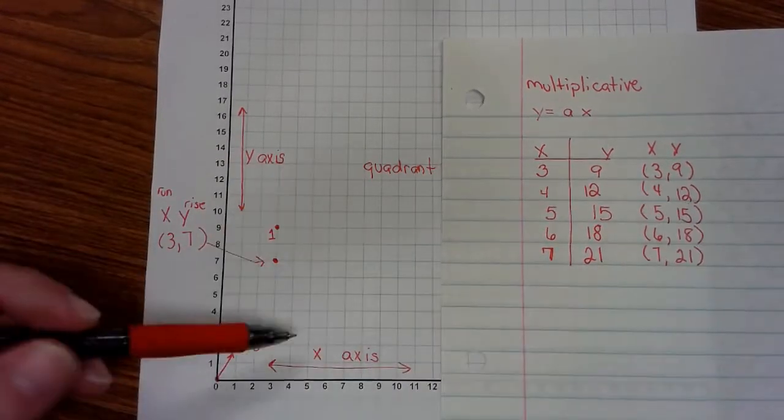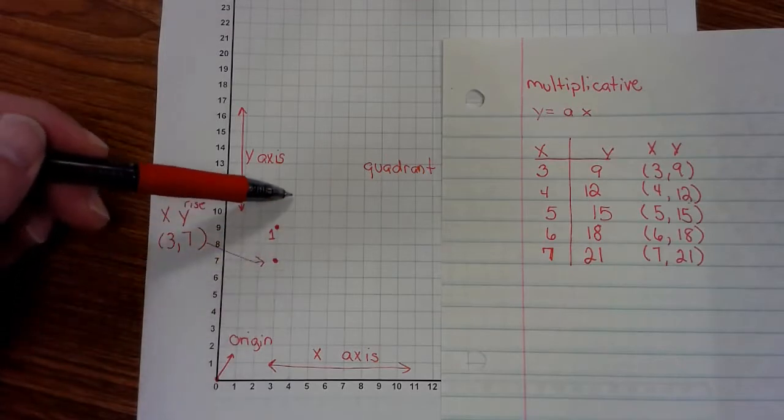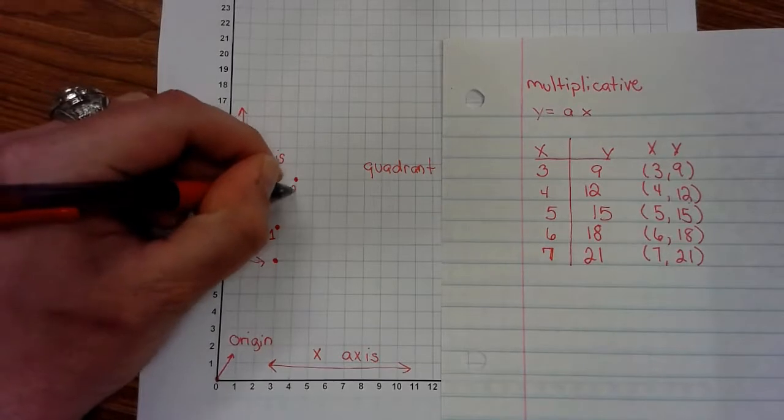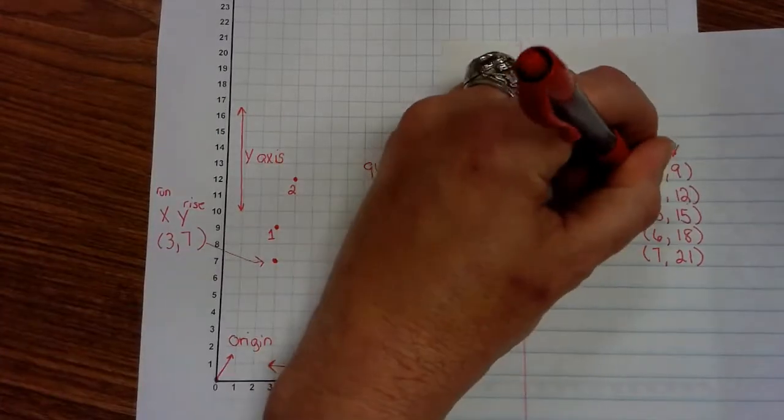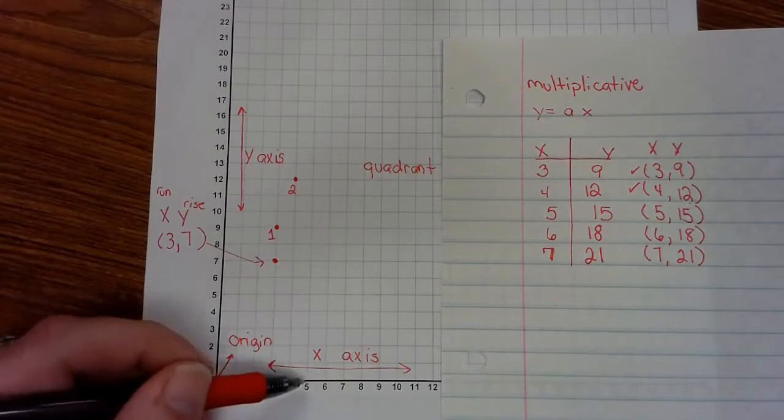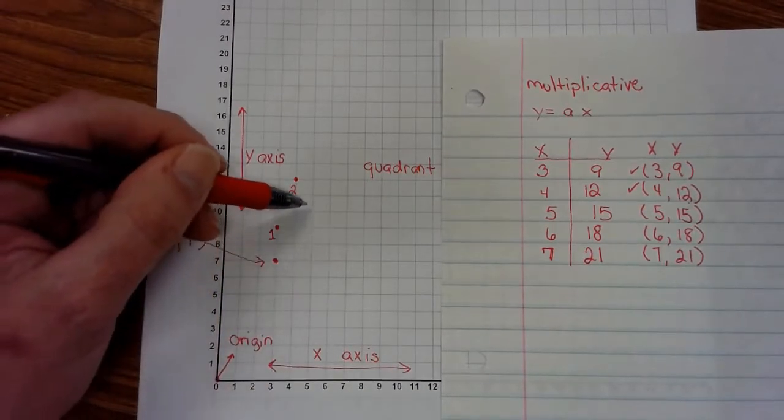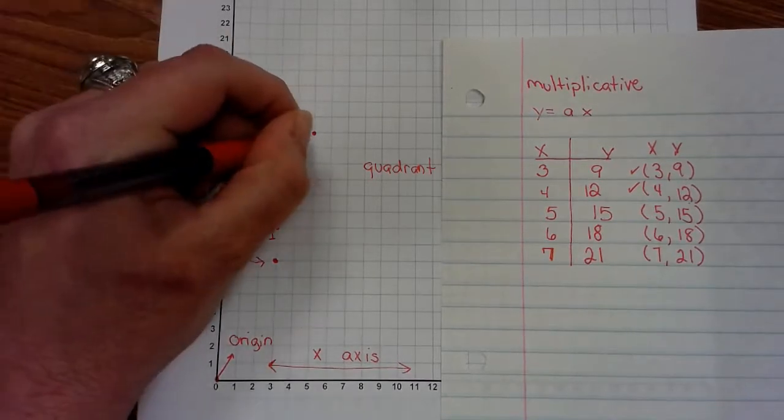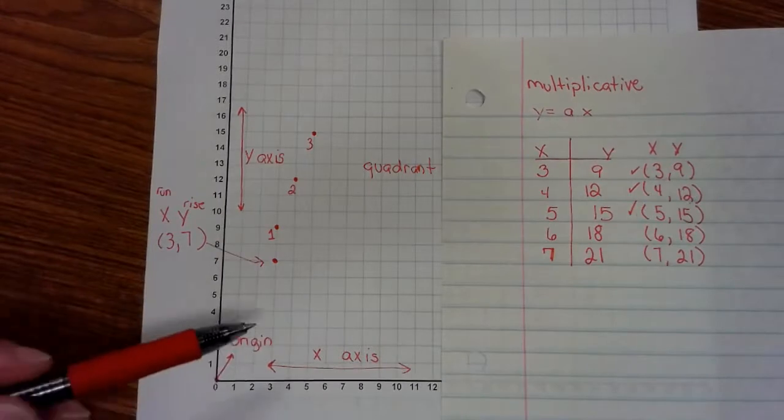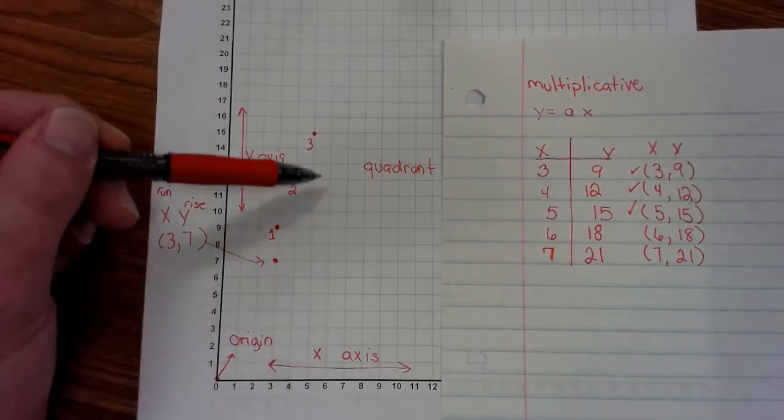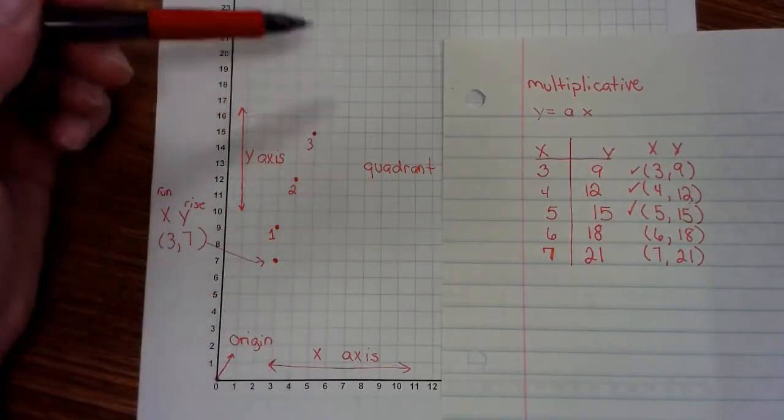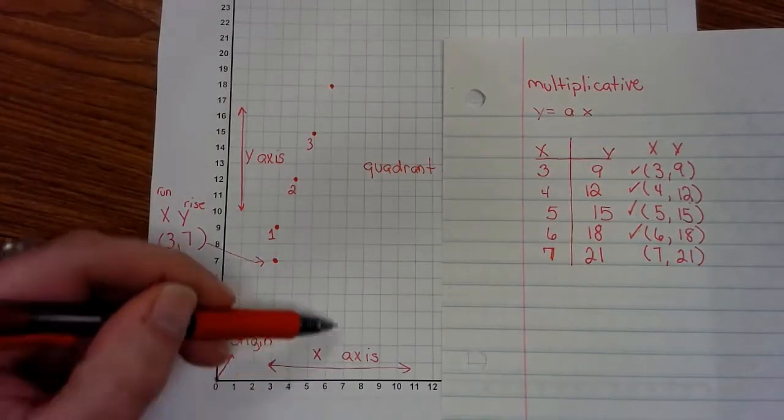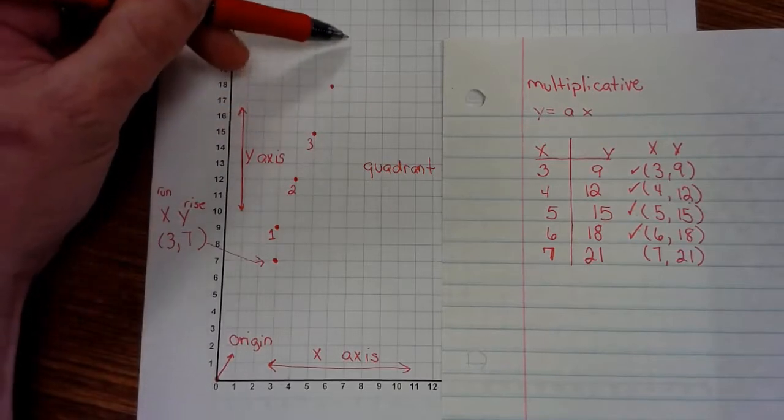4, 12. Go to 4, up to 12. That was plot 2. Go over to 5, up to 15. 6, up to 18. And 7 to 21.